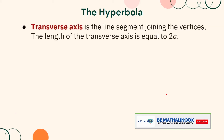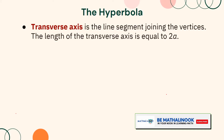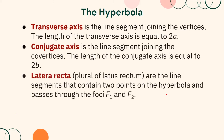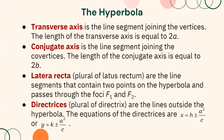The transverse axis is the line segment joining the vertices, with length 2a. The conjugate axis is the line segment joining the co-vertices, with length 2b. The latera recta are the line segments that join two points on the hyperbola and pass through the foci F₁ and F₂. Finally, the directrices are lines outside the hyperbola, with equations x = h ± a²/c or y = k ± a²/c.